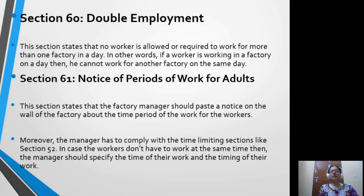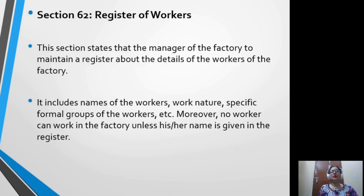Section 61 covers notice of periods of work for adults. The factory manager should paste a notice on the walls of the factory about the time period of the workers, and must comply with the time-limiting sections like Section 52. If workers do not have to work at the same time, the manager should specify the timing of their work. Section 62 covers the register of workers: the manager of the factory must maintain a register about the details of the workers, including names, nature of work, specific formal groups of the worker etc. No worker can work in the factory unless his or her name is given in the register.